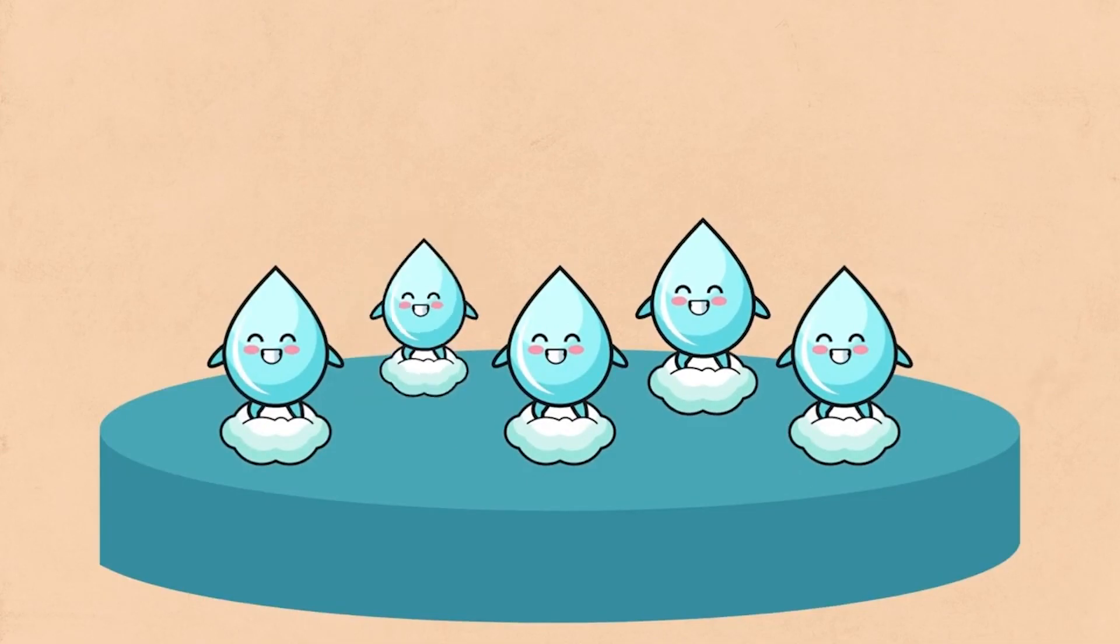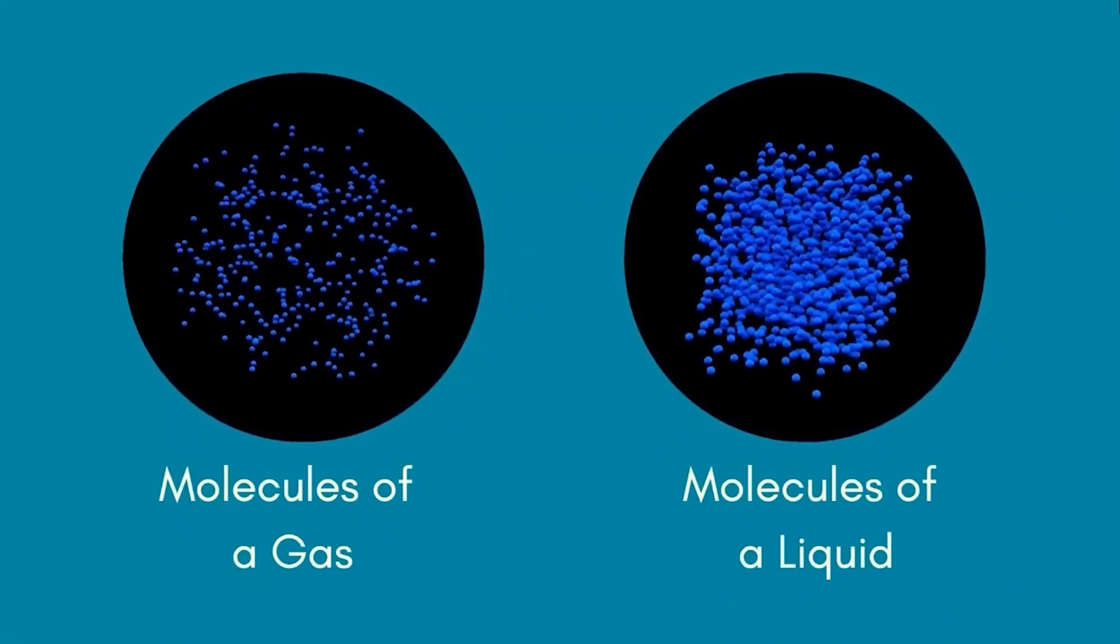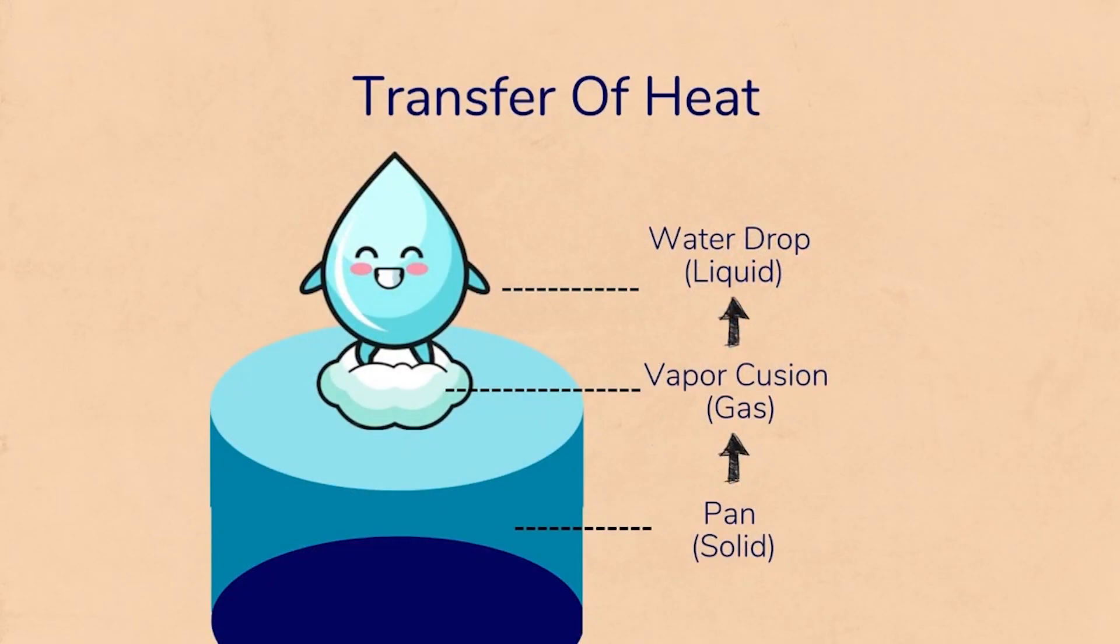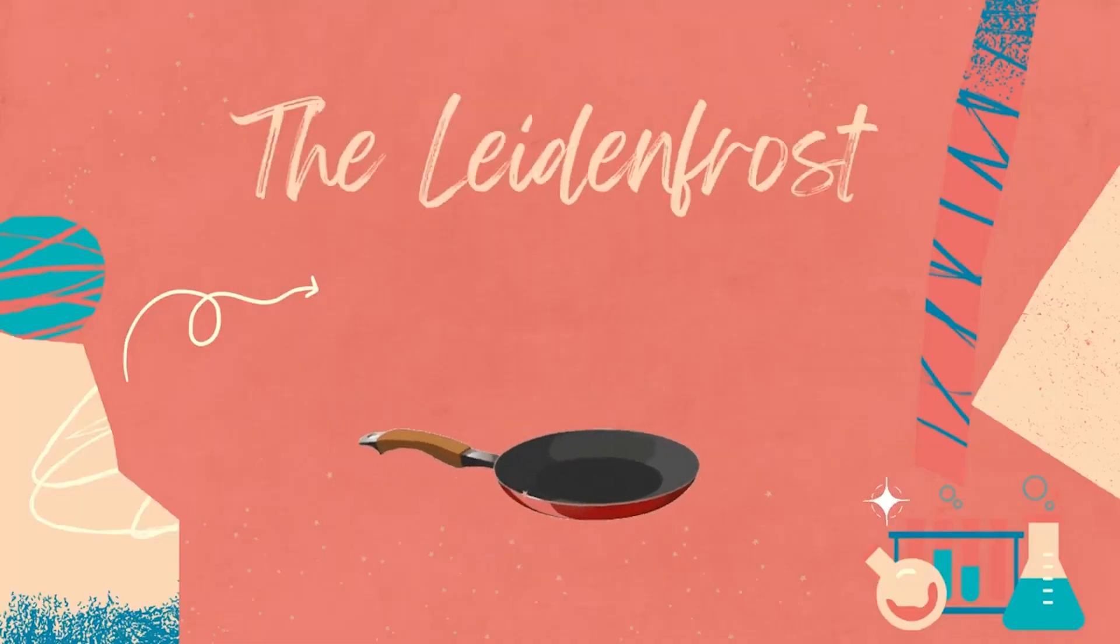The drop of water is suspended on this vapor cloud. Because the molecules of vapor are packed far more loosely as compared to those of liquid, the transfer of heat from the pan to the drop takes place at a much slower pace. As a result, the water boils very slowly and glides until it finally evaporates. This is called the Leidenfrost effect.